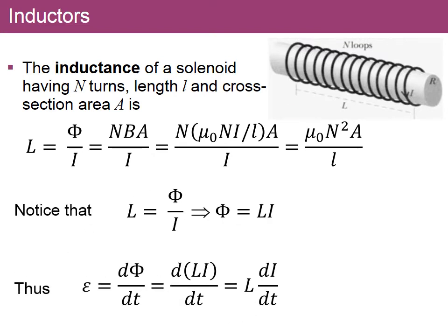Once you have the inductance — which is how you would purchase one at an electronics store — you can calculate the flux simply by multiplying L times the current. If the current is changing and you're interested in the induced voltage, the EMF is given by the derivative of L·i. Since L is a constant, the EMF depends only on the rate of change of current, di/dt.